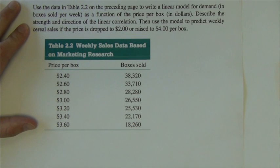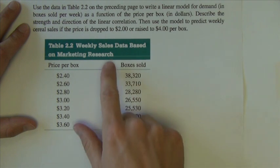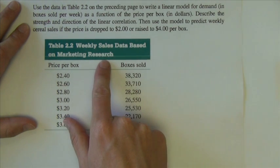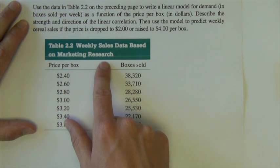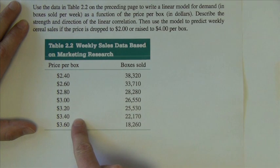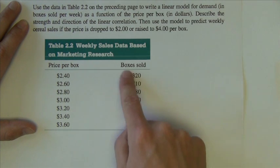In this example, we're going to look at a scatterplot, find a regression line, the equation of a regression line, and then use it to predict values. We're going to do it all with the graphing calculator. This table shows the weekly sales data based on marketing research for boxes of cereal - the price per box and then the number of boxes that were sold.